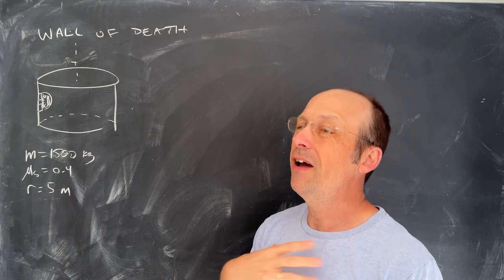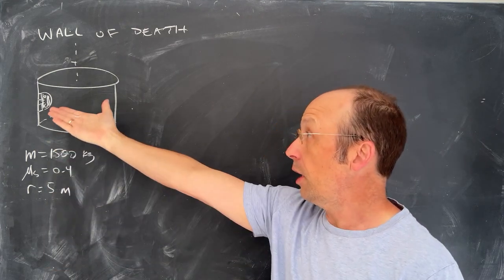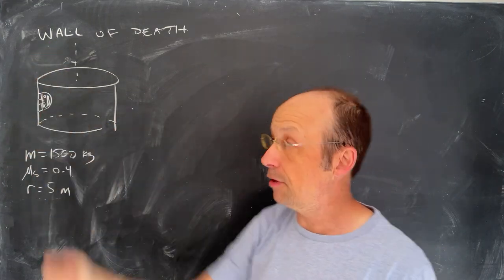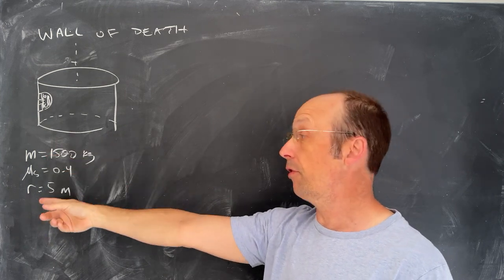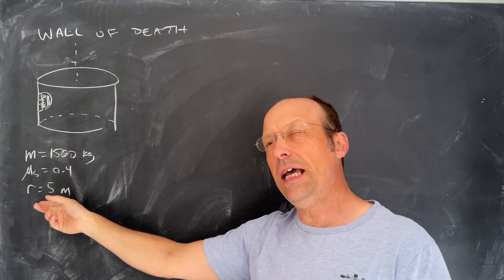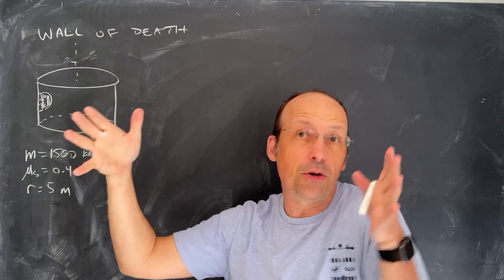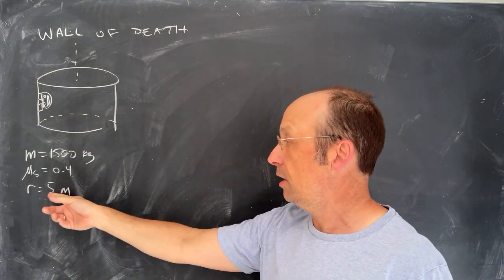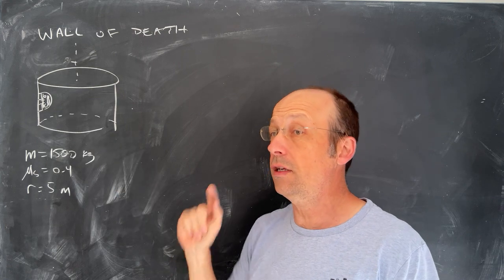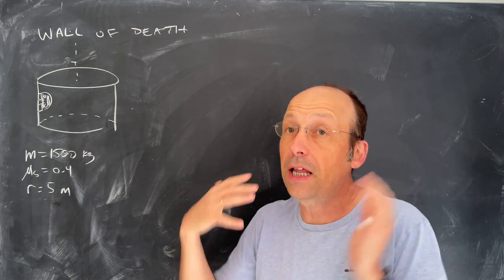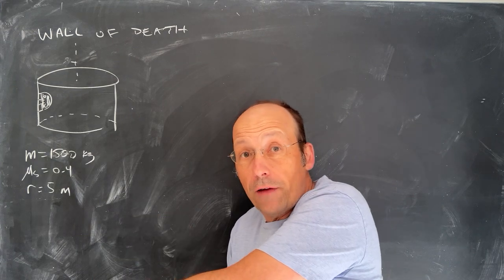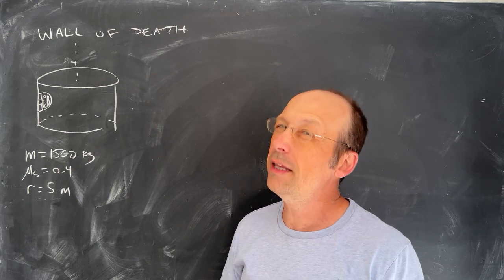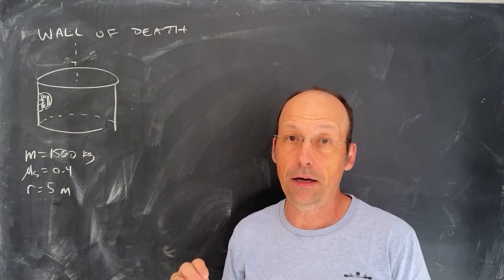I'm going to use a car because physics-wise it's a little bit easier. So here we have a car driving on the wall of death — it's going around, coming out of the page at this point. I gave it a mass of 1,500 kilograms. These walls of death have a radius between 3.5 and 5 meters, but let's just use 5. And I'm going to say there's a coefficient of friction between the tires and the wall of 0.4 — I just picked a value. If that's the case, how fast would you have to drive in order to not fall? It probably wouldn't kill you, but you've got to have a dramatic name, otherwise people aren't going to pay to see it.